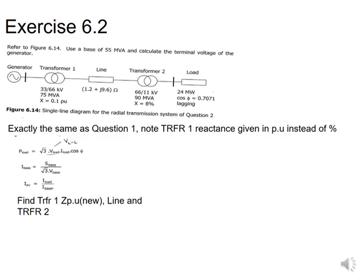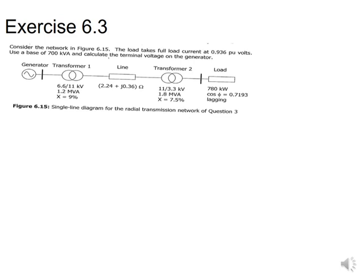For the line, the formula is Z actual times S divided by V squared. For transformer 2, it is 0.08 for the 8%, multiplied by 55 divided by 90. You then calculate V gen per unit by adding V load, V transformer 2, V line, and V transformer 1. From that, you calculate the actual generator voltage by multiplying the per unit value by the base voltage — which is 3 kV from transformer 1, closest to the generator.